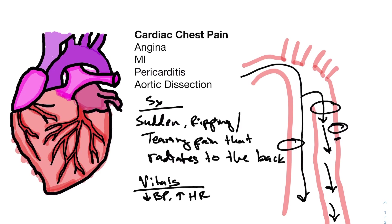The symptoms of an aortic dissection include a sudden ripping or tearing type pain that radiates to your back. The reason it radiates to the back is that the aorta, as it travels away from the heart, travels right above your spinal column. Your vitals will be variable, but if it's bad enough you can have a decrease in blood pressure, and as your heart tries to compensate and push out more blood, your heart rate will go up as well.